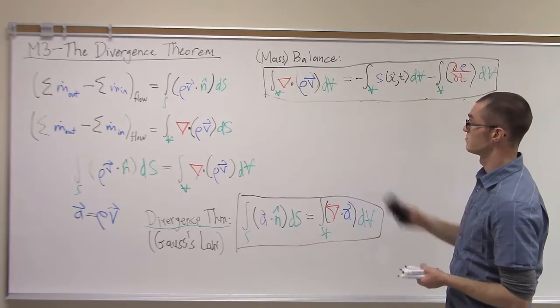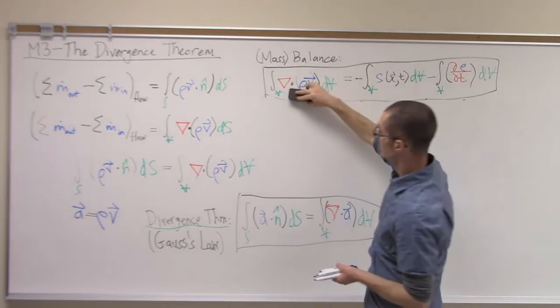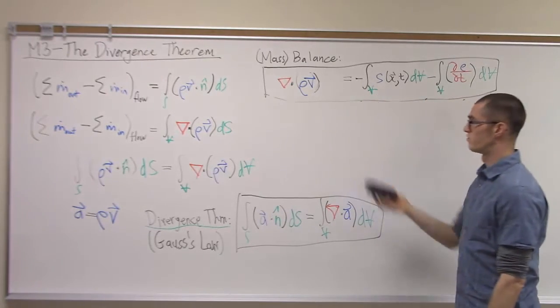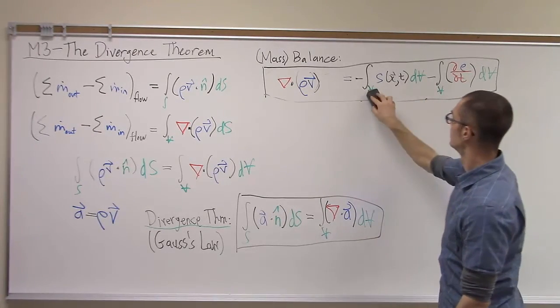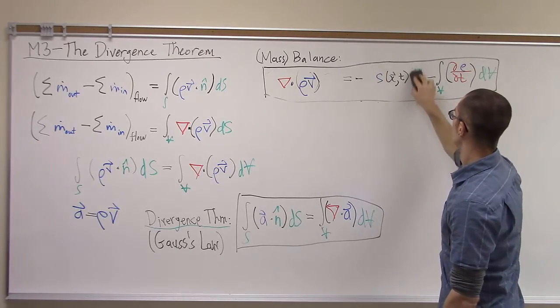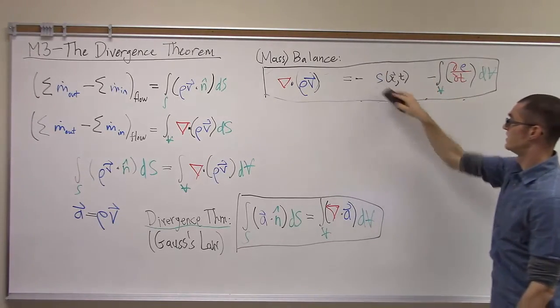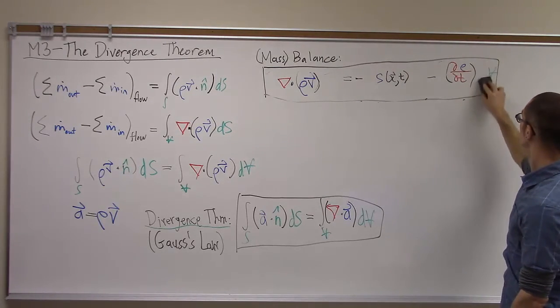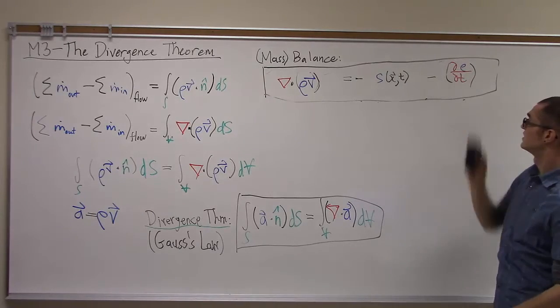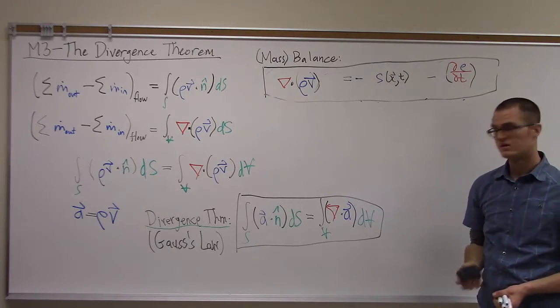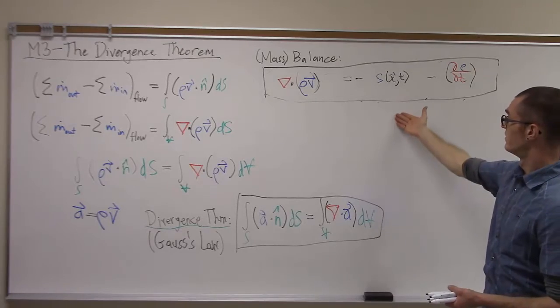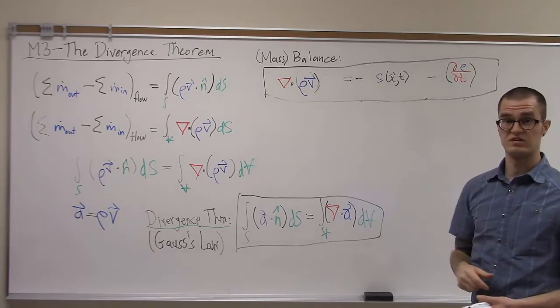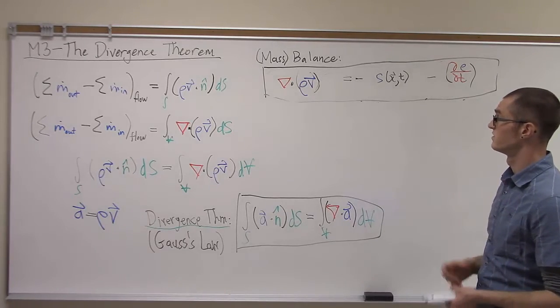we can dispense with the integrations and say that the divergence of ρV at a point is equal to the negative of any source term at that point, minus the rate of change of concentration at that point. So this is now the differential form of the mass balance equation. The previous one was the integral form, and this form is the differential form.